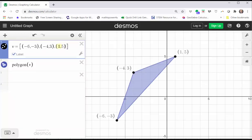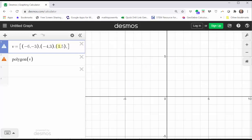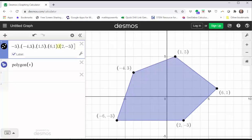One comma five, six comma one, and two comma negative three. And notice how we have our pentagon on the right.